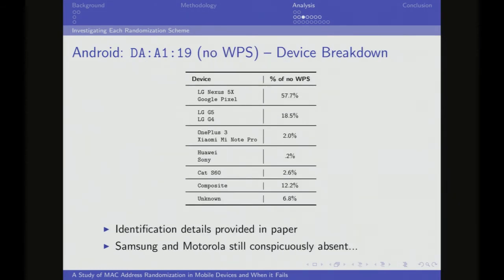We also have a large subset of DA:A1:19 prefixes that don't have WPS information, so we don't know which manufacturers and models those belong to. Basically, we take MDNS packets that have device model information in the DNS TXT field, take the global MAC address from those, find probe requests that have that same global MAC address, and derive a signature of what that probe request looks like. Using that, we can guess what type of models match that signature when using randomized MAC addresses, purchase those devices, and confirm the match.